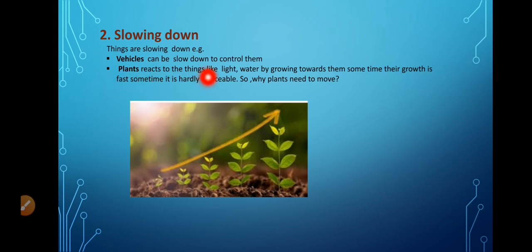Because these both things are necessary for their food making process. So plants react to the things like water, light by growing towards them. Sometimes their growth is fast but sometimes it is hardly noticeable. Look in this picture. The growth is shown of a plant towards the sunlight. So plants move towards light that is necessary for their food making process.